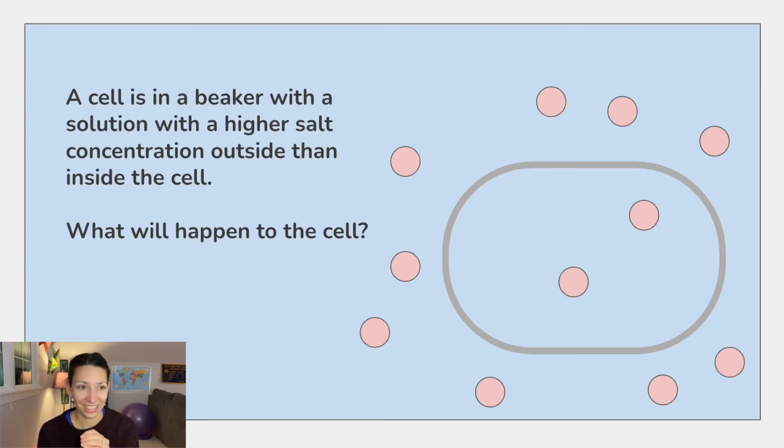So let's do a little bit of practice together. A cell is in a beaker with a solution with a higher salt concentration outside than inside the cell. What will happen to the cell? Think about it. Water is going to move out. Remember, solute sucks. Water will move towards the lower concentration of water and out of the cell, and the cell may even shrink.